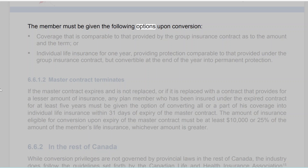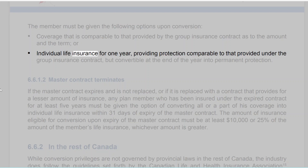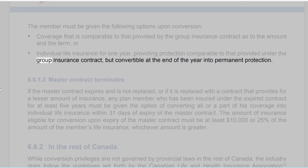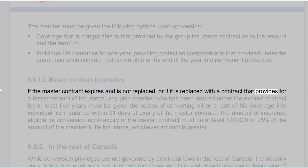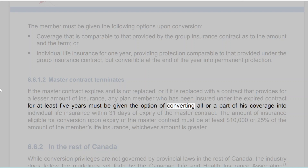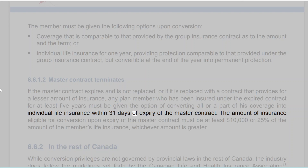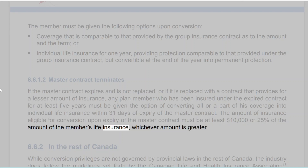The member must be given the following options upon conversion: coverage that is comparable to that provided by the group insurance contract as to the amount and term; or individual life insurance for one year, providing protection comparable to that provided under the group insurance contract, but convertible at the end of the year into permanent protection. 6.6.1.2 Master Contract Terminates. If the master contract expires and is not replaced, or is replaced with a lesser amount of insurance, any plan member insured under the expired contract for at least five years must be given the option of converting all or part of his coverage to individual life insurance within 31 days of expiry. The amount eligible for conversion must be at least $10,000 or 25% of the member's life insurance, whichever is greater.